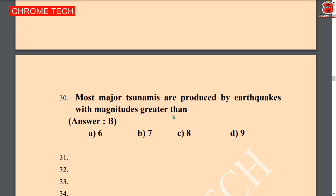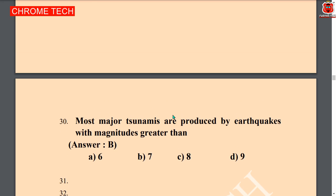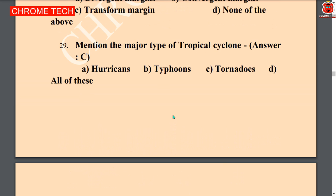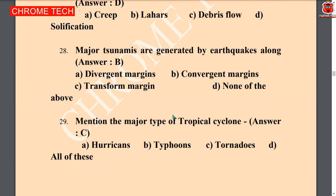Most major tsunamis are produced by earthquakes with magnitude greater than — option B, 7. Most major tsunamis are produced by earthquakes with magnitude greater than 7 is the correct answer. Check the description box for more questions. Thanks for watching, subscribe to the channel. In the next video we will see more important multiple choice questions. Thank you.